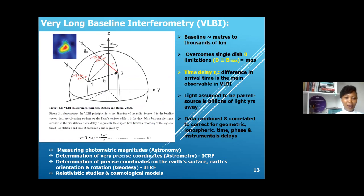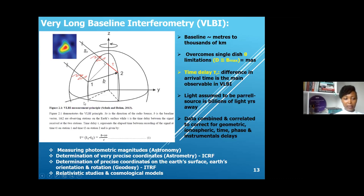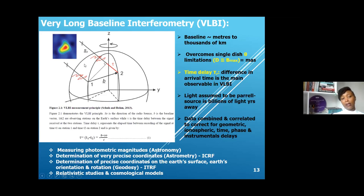We move from an array of a few hundred kilometers to an array of thousands of kilometers that forms the Very Long Baseline Interferometry. I won't get into details of the VLBI technique, but generally there is a time delay — the difference in arrival time between station one and station two, which are two antennas on the Earth's surface.